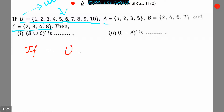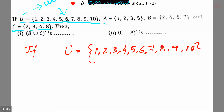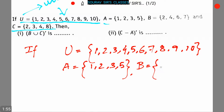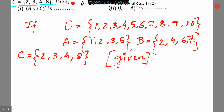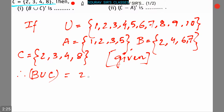U is equal to {1, 2, 3, 4, 5, 6, 7, 8, 9, 10}, A is {1, 2, 3, 4, 5}, B is {2, 4, 6, 7}, and C is {2, 3, 4, 8}. These values are given in the question. From this we can write that B∪C is equal to {2, 3, 4, 6, 7, 8}.